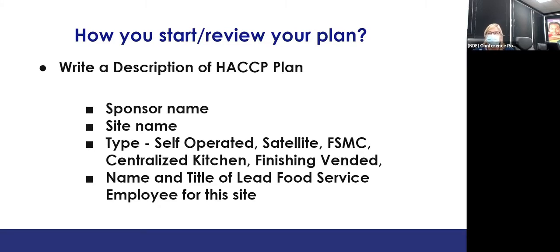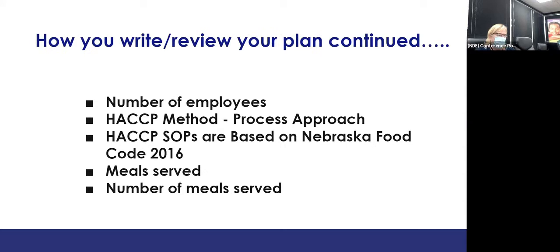Put the name and title of your lead food service employee. Do this in a Word document so you can change it easily. List the number of employees you have this year — you may need to add paras if they're helping you serve in the cafeteria due to COVID. Put the type of HACCP method; we use the process approach because that's what schools use. List your HACCP SOPs based on Nebraska Food Code 2016, and name every meal you serve: breakfast, lunch, fresh fruit and vegetable program, after-school snacks, special milk, etc.